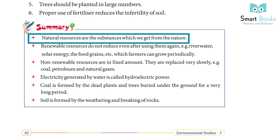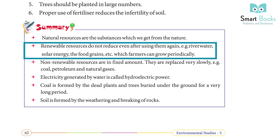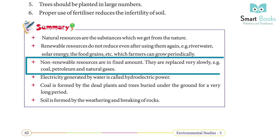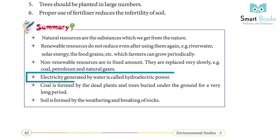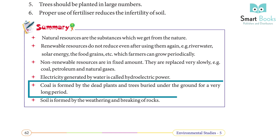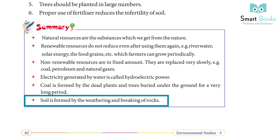Summary: Natural resources are substances which we get from nature. Renewable resources do not reduce even after using them again — e.g., river water, solar energy, and food grains which farmers can grow periodically. Non-renewable resources are in fixed amount and are replaced very slowly — e.g., coal, petroleum, and natural gases. Electricity generated by water is called hydroelectric power. Coal is formed by dead plants and trees buried underground for a very long period. Soil is formed by the weathering and breaking of rocks.